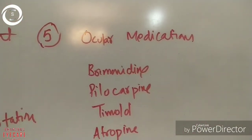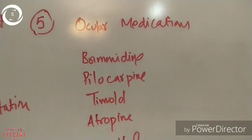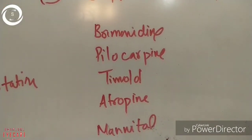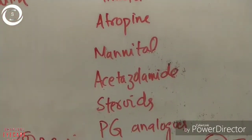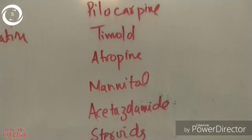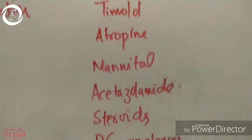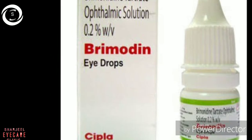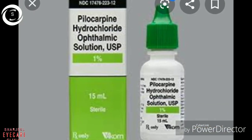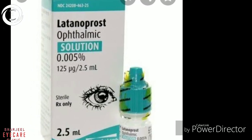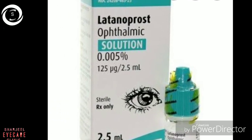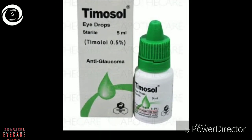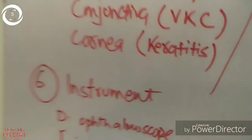For the fifth station, I will cover ocular medications — brimonidine: mechanism of action, indications, and side effects; pilocarpine, timolol, atropine, mannitol, acetazolamide, steroids in ophthalmology, and prostaglandin analogues. You will get one of these medications and should know all about it: mechanism of action, indications, adverse effects, and any specific points related to ophthalmology.